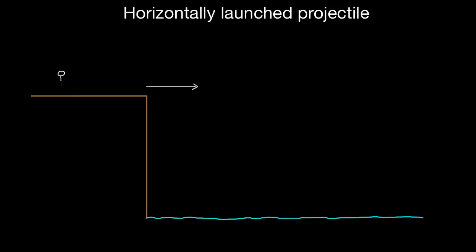A more exciting example — people do crazy stuff. Let's say this person's going to cliff dive or base jump. They're going to run, but they don't jump off the cliff. They just run straight off of the cliff because they're kind of nervous. Let's say they run off of this cliff with five meters per second of initial velocity straight off the cliff. And let's say this cliff is 30 meters tall — that's like over 90 feet. That is kind of crazy.